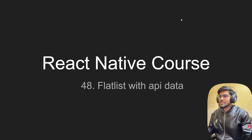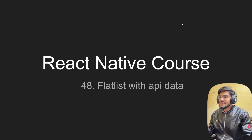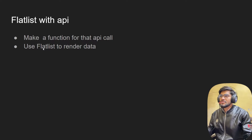Hey guys, welcome back to the React Native course. In the last video we saw how to make an API call and render data using the map function. In this video we are going to make an API call and render a list of data using the FlatList component. We're going to make a function that makes an API call and use FlatList to render the data.